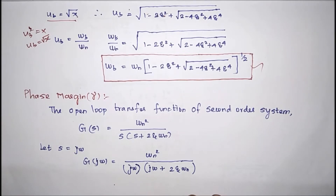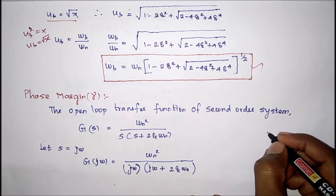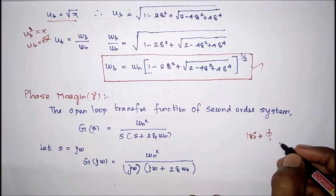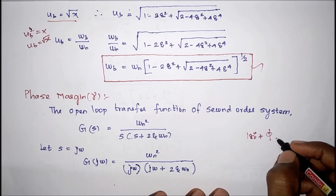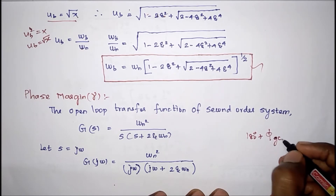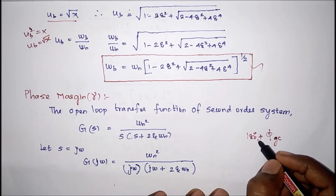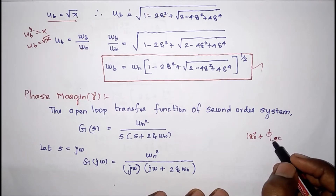In this video we are going to derive the phase margin — a frequency domain response specification. Phase margin is the angle to be added with 180 degrees to bring the unstable system to become stable. The angle to be added is the angle at which the gain crossover frequency occurs, added with 180 degrees to bring the unstable system to a stable system. That is the definition of phase margin.